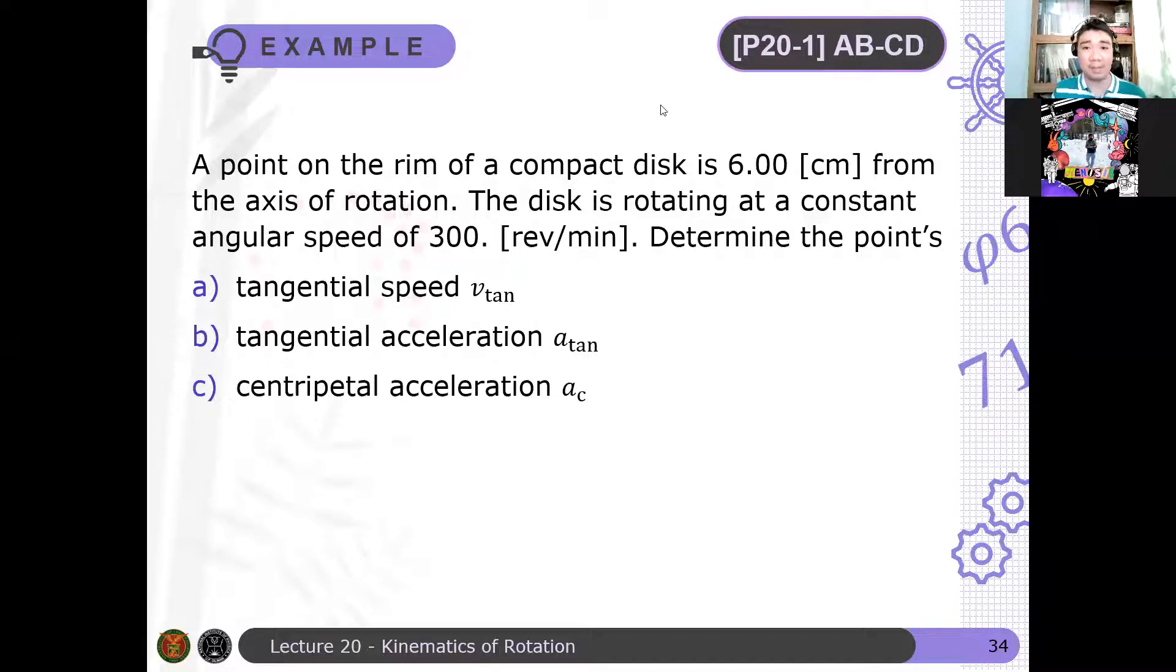Now, let's solve problems for this topic. The first problem that I will be solving is ABCD. A point on the rim of a compact disc is 6 centimeters from the axis of rotation. The disc is rotating at a constant angular speed of 300 revolutions per minute. So be careful with the units - many people make mistakes with units. So let's say, for example, the units here are revolutions per minute.